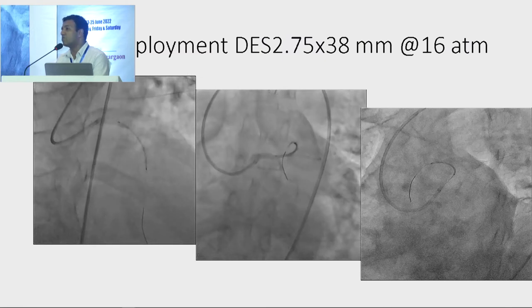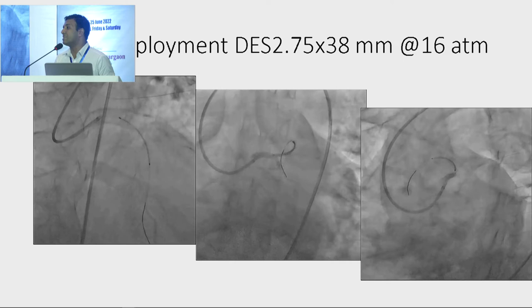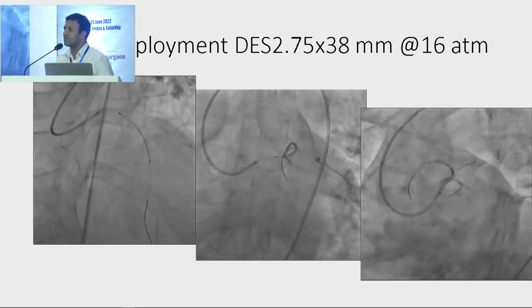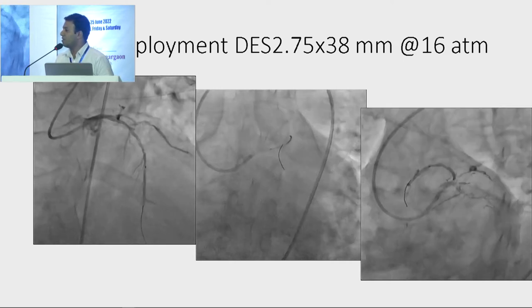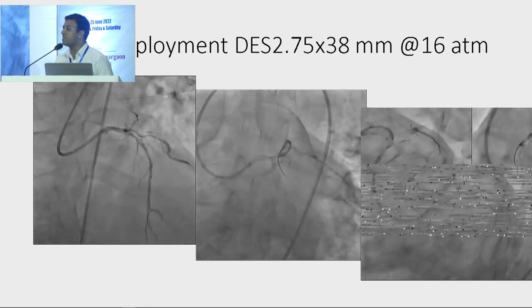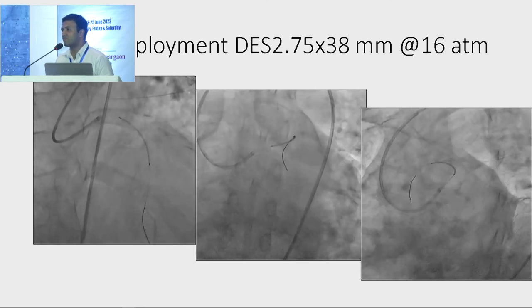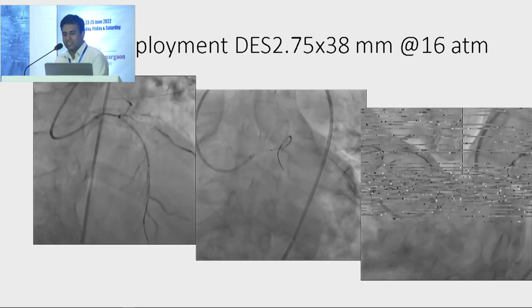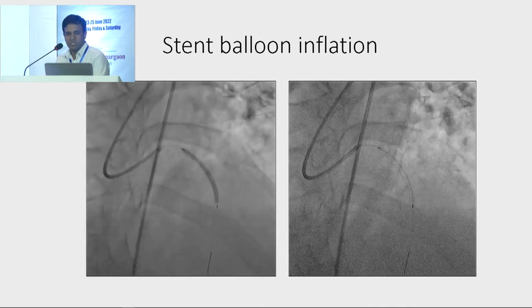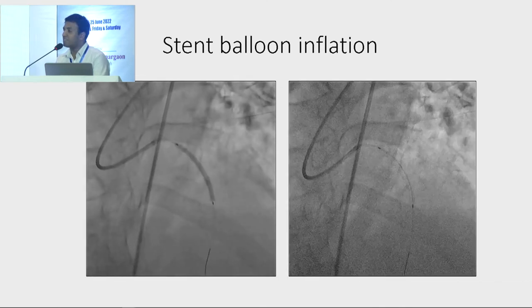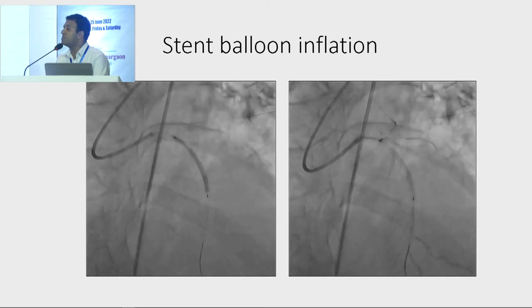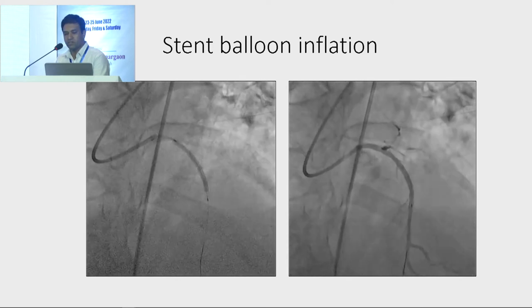According to OCT calculation, the lesion length was 35.5 mm. So we placed one stent — 38 mm in length and 2.75 mm in diameter — deployed at 16 atmospheres. We inflated the stent balloon and you can observe that TIMI 3 antegrade flow was achieved.